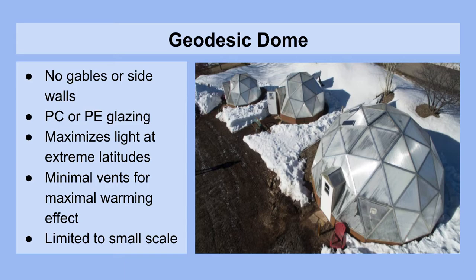Next, we'll take a look at geodesic domes. There are no gables or sidewalls on these structures. They can be polycarbonate or polyethylene glazed and they maximize light at extreme latitudes. In the winter there's very little light in general, so you'll be using supplemental lighting in these scenarios. But in the summer, in Alaska for example or near the poles, you have the sun that literally rotates in the sky and will be hitting the greenhouse from every possible angle. These greenhouses have minimal vents for maximal warming effect and are generally not concerned with cooling. However, they are limited to a small scale as it's very hard to build this greenhouse over a large acreage, and you would instead deploy multiple small modules.